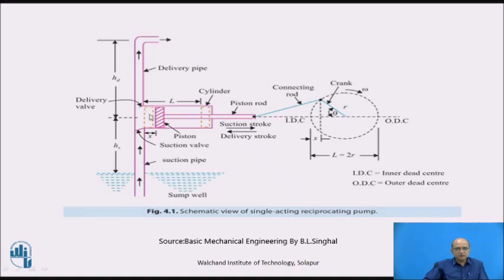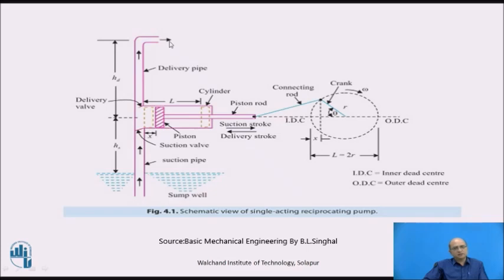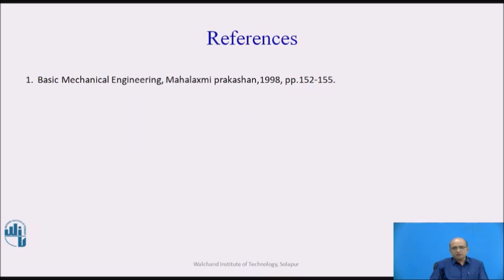The water rushes from the suction side into the cylinder and the piston movement continues. When the piston reaches the outermost position again, it starts moving inward, closing the suction valve and opening the delivery valve, because the water is subjected to high pressure on that side. The water then rushes into the delivery pipe and gets delivered to the tank stored on the terrace. Like this, the strokes are completed and water gets delivered from the sump to the delivery tank. Thank you.